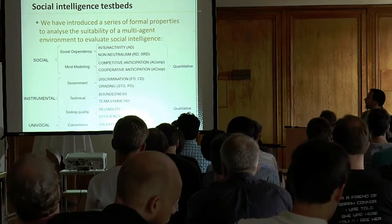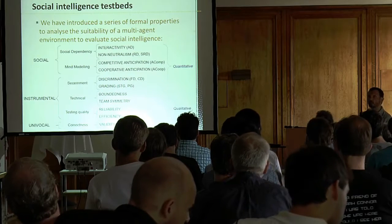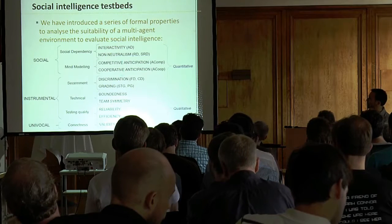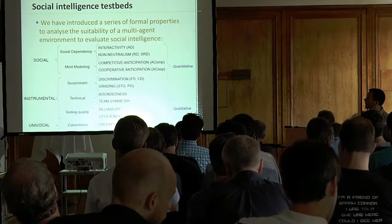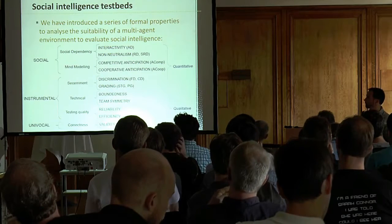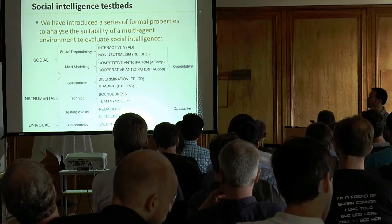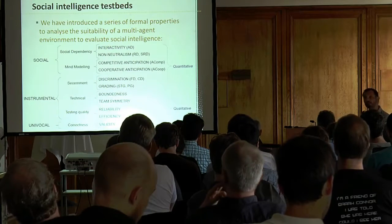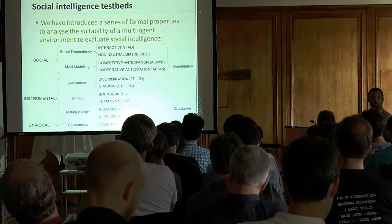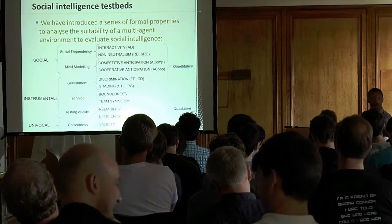What we did was develop a series of criteria to determine whether a test bed can accurately measure social abilities. We came up with a series of properties — some specifically about social things, and some more instrumental about whether the measurement instrument is doing something reasonable, like the classical reliability and validity, plus efficiency and others. These definitions are not final — we've changed them several times — but this is the first approach.